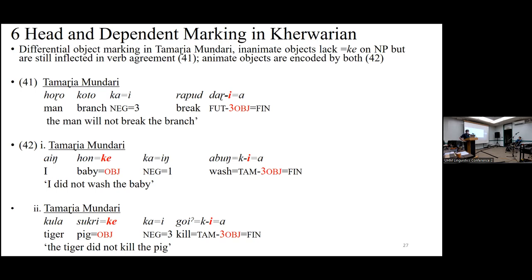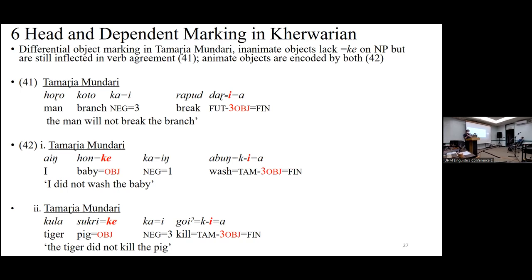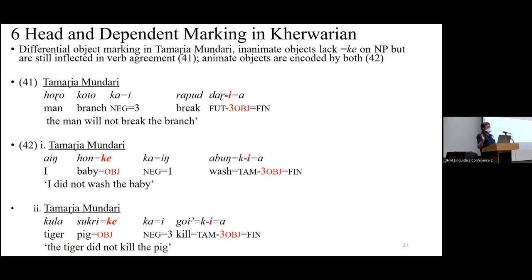Tamari Mundari is another Kherwarian language. Its system is similar, except the dependent marking system doesn't like to mark inanimate objects. So there's an animacy-based split in the distribution of object marking, but it will still encode inanimate objects as objects in the head-marking system. So the dependent marking system shows an animacy split, but the head-marking system doesn't.